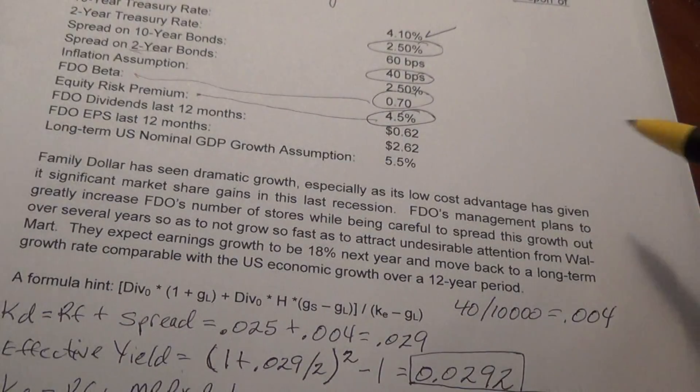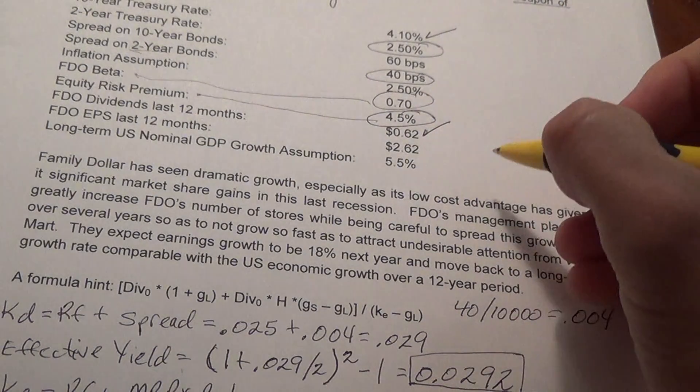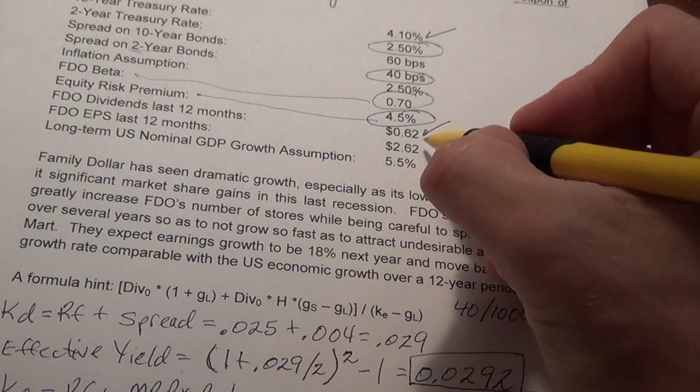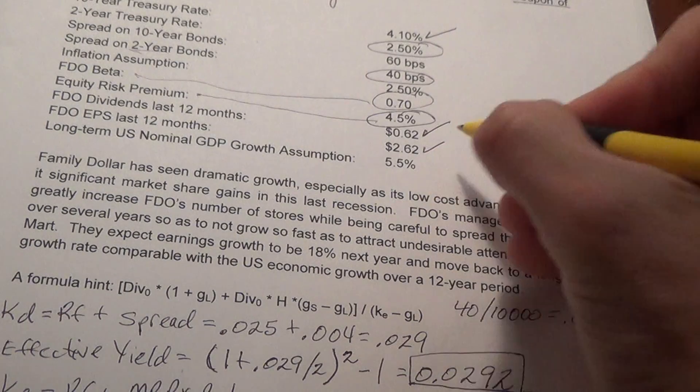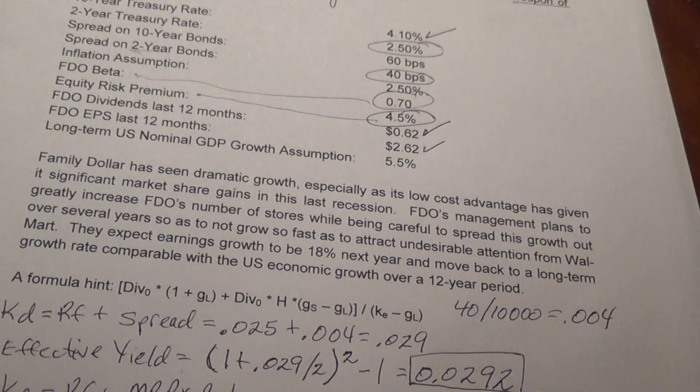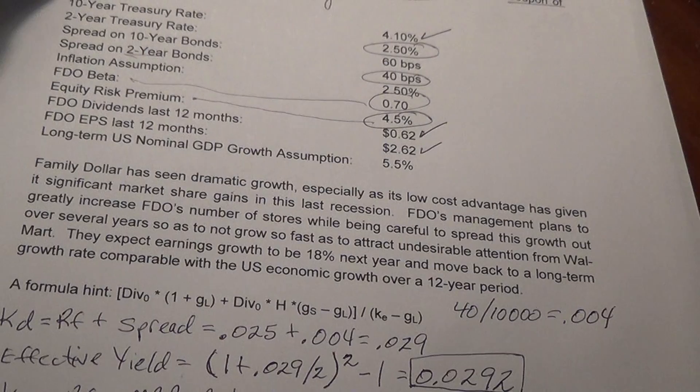We have some information here. The dividend for the last 12 months is 0.62, 62 cents. The earnings per share is $2.62. And so the price of the stock, we use three models.